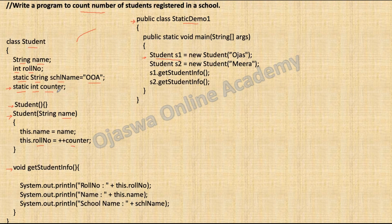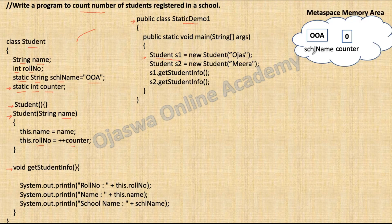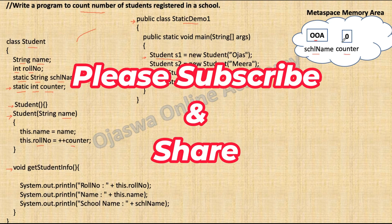Where is the memory for static variables allocated? Inside the area known as metaspace. So inside metaspace, memory for static variable school name is reserved and the value 'Double A' is stored. Also, memory for static variable counter is reserved. We have not assigned any value to the variable counter, hence the default value is zero. The default value for integer variables is always zero.